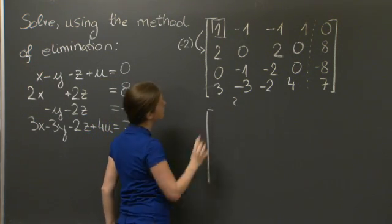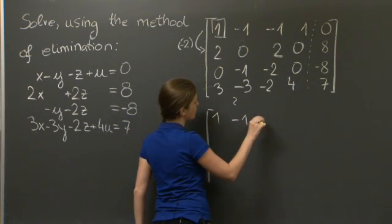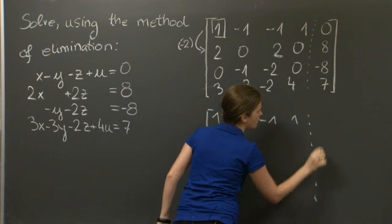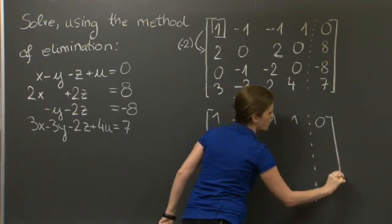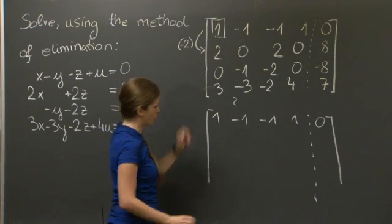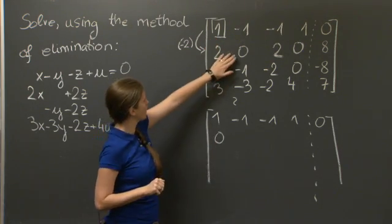So we replace this matrix with another matrix. The first row stays the same: 1, -1, -1, 1, 0. The second row gets replaced by the second row minus 2 times the first row. The aim of that is to get a 0 here. So that's good.